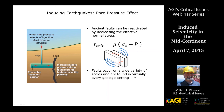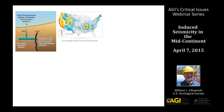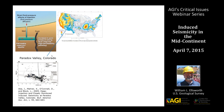Faults are found virtually everywhere in the Earth on a wide variety of scales and in every geologic setting, making it very difficult to directly avoid them. But the size of the fault determines the size of the earthquake, so if we can avoid large faults, we can reduce the potential for a large induced earthquake. Also, stresses are near the failure point almost everywhere, so it takes only a small change in pore pressure in many instances to bring a fault to failure. One example is in western Colorado, where the Bureau of Reclamation injects salt water to keep it out of the Colorado River system — that injection generates many earthquakes.